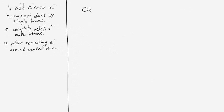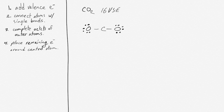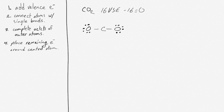We can also have more complicated examples. Consider CO2, or carbon dioxide, which has 16 valence shell electrons — six from each of the oxygens for a total of 12, plus four from the carbon. We connect the atoms with single bonds, placing the more electronegative oxygens on the outside. We then complete the octets of our outer atoms, placing 12 electrons around the oxygens, giving us all 16 valence shell electrons used with zero remaining. The oxygens are satisfied with six electrons from lone pairs and two from the bond.